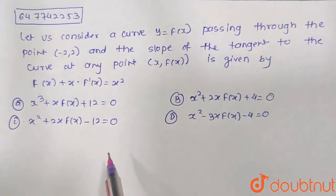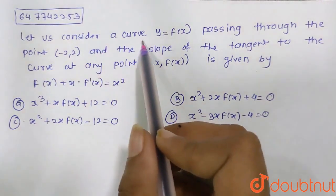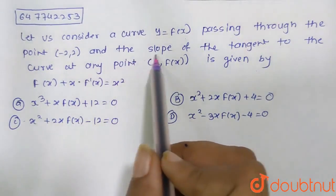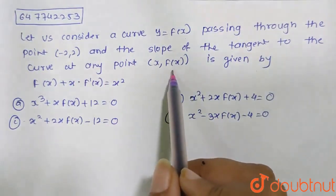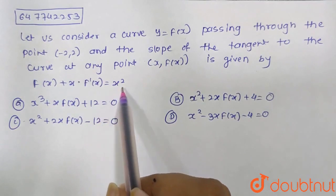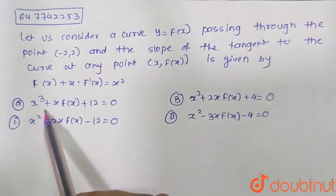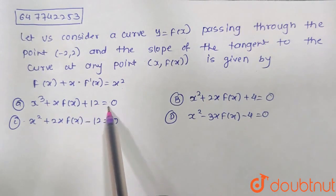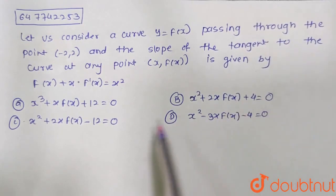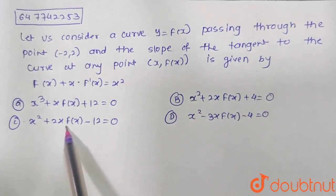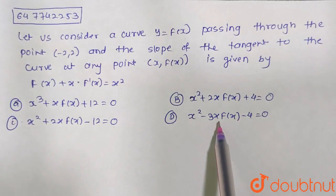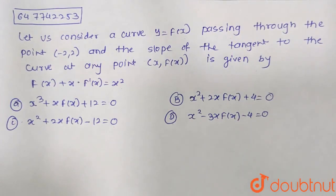Hello everyone. The given question is: let us consider a curve y = f(x) passing through the point (-2, 2), and the slope of the tangent to the curve at a point (x, f(x)) is given by f(x) + x·f'(x) = x². Options: (a) x³ + x·f(x) + 12 = 0, (b) x² + 2x·f(x) + 4 = 0, (c) x² + 2x·f(x) − 12 = 0, (d) x² − 3x·f(x) − 4 = 0.